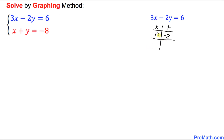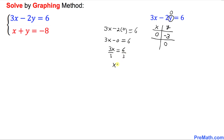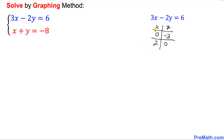In the next step, we put y equal to 0 and find the x value. Wherever y appears, it becomes 0. So we get 3x minus 2 times 0 equals 6, which simplifies to 3x equals 6. Dividing both sides by 3, x turns out to be 2. So when y equals 0, x is 2.